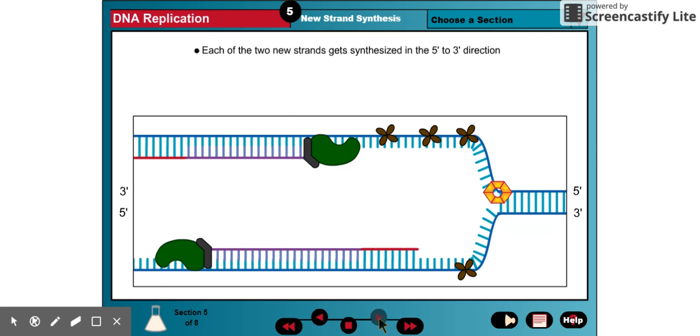Due to the anti-parallel nature of the DNA strands, however, the polymerase enzymes on the two strands start to move in opposite directions.